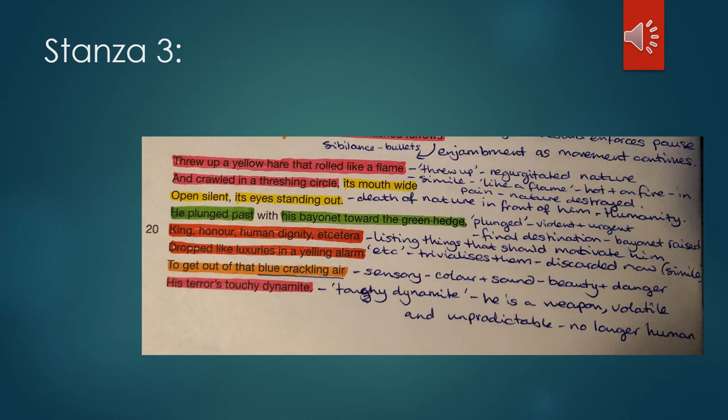So line 19, he plunged past with his bayonet towards the green hedge. Plunged again means that he started moving again. The triggering of watching this animal die in front of him has triggered once again him starting off. It's a really violent and urgent verb there, the plunged past. You've also got alliteration as well. His bayonet is once more raised up and he is headed back again towards this green hedge. So you have the repetition of green hedge because it is his final potentially destination again.